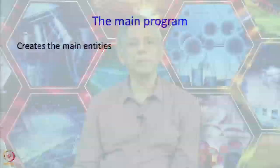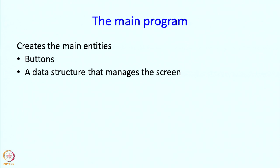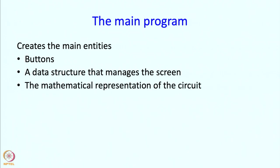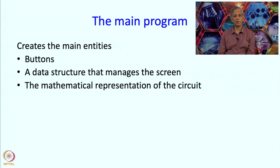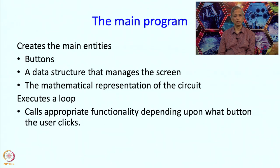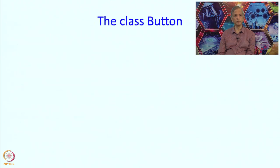The main program will create the main entities — the buttons — and a data structure that manages the screen. It will also create a data structure that keeps track of the mathematical representation of the circuit. Inside the loop, it will call appropriate functionality depending on which button the user clicks. Let us now take a look at the main program.